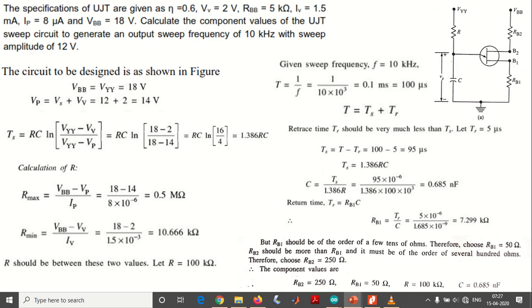With this, the component values we have calculated for the sweep circuit are: RB2 equals 250 ohms, RB1 equals 50 ohms, R equals 100 kilo ohms, and capital C equals 0.685 nanofarad. Using these components, we designed this UJT sweep circuit. In similar fashion, there are quite a few examples available in textbooks. I request you to go through the solved problems, and if you find any difficulty, please raise a question and we will discuss it and solve the problems. Thank you.